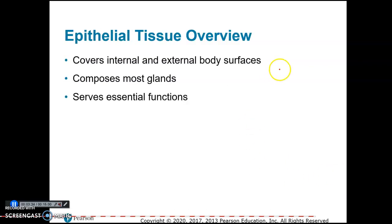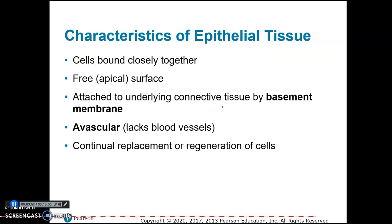Epithelial tissue overview: epithelial tissue forms the coverings of internal and external body surfaces. The outside layer of the skin, the epidermis, is epithelial tissue. Epithelial tissue also composes most glands and serves essential functions that we'll talk about.